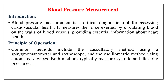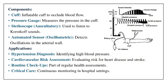Blood Pressure Measurement Introduction: Blood pressure measurement is a critical diagnostic tool for assessing cardiovascular health. It measures the force exerted by circulating blood on the walls of blood vessels, providing essential information about heart health. Principle of Operation: Common methods include the auscultatory method using a sphygmomanometer and stethoscope, and the oscillometric method using automated devices. Both measure systolic and diastolic pressures. Components: Inflatable cuff to occlude blood flow, pressure gauge, stethoscope for auscultatory use to listen to Korotkoff sounds, and automated sensor for oscillometric detection of arterial wall oscillations.